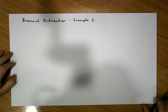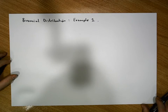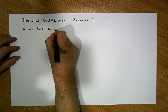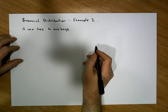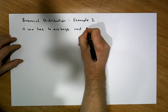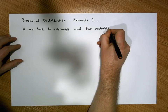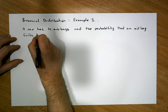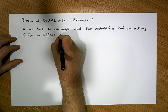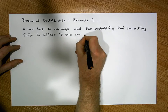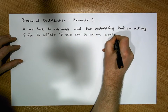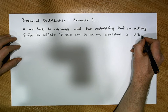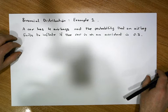This is example one — there will be more videos to follow dealing with different contexts. Let's consider a simple example: a car has four airbags, and the probability that an airbag fails to inflate if the car is in an accident is 0.3. That's a very high probability, but for this scenario let's assume it's 0.3.